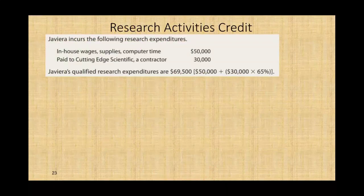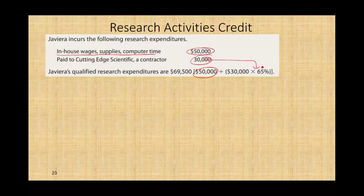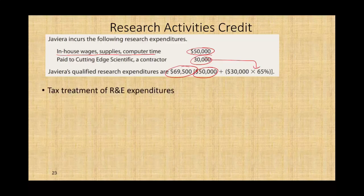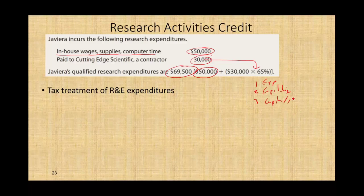Jafiera incurs the following research expenditures: in-house wages, supplies, and computer time totaling $50,000 — that's fully qualified expenditure. Paid to an outside scientific contractor: $30,000, of which only 65% qualifies. All in all, we have $69,500 of qualified research expenditure. How do we treat research expenditure? We can do three things: expense it fully, capitalize it, or capitalize and then amortize over time.